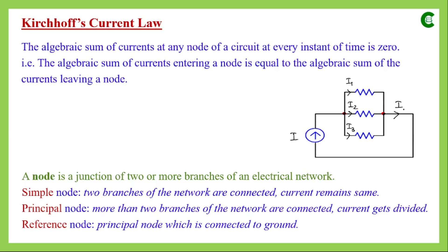All three currents add back at one point, making the current value I again. In an electrical network, there are three types of nodes. The first is a simple node — a node where only two branches are connected. When two resistors are connected in series, that junction is a simple node. Because they are in series, if the current through the first resistor is I, then the current through the second resistor is also I. At a simple node, the current value remains the same through both connected branches.